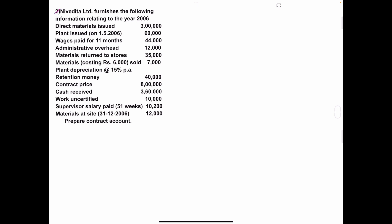Problem number two. Nivedita Ltd furnishes the following information relating to the year 2006. Direct material issued: 3 lakhs. Plant issued on 1st May 2006: 60,000. Wages paid for 11 months: 44,000. Administrative overhead: 12,000. Materials returned to store: 35,000. Materials costing rupees 6,000, sold for 7,000. Plant depreciation at 15% per annum.